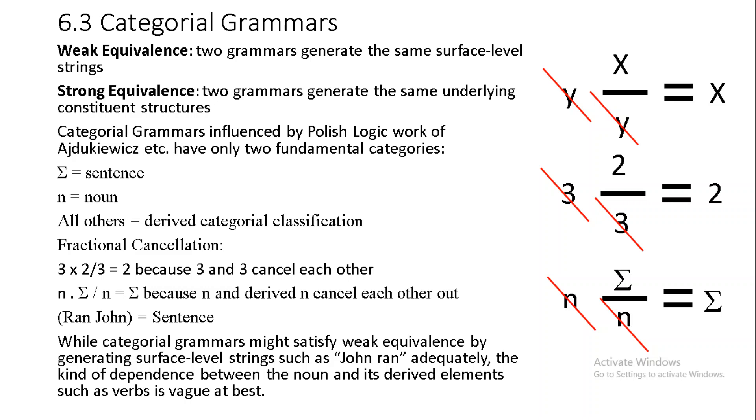What are we to make though of the fact that one could arrive at the same generated surface level sentences despite positing multiple underlying grammatical systems? Well let's just briefly examine categorical grammar to see the difference between strong and weak equivalents. In short two grammars have weak equivalents if they can generate the same surface level strings and have strong equivalents in contrast if they can generate the same underlying constituent structures. Once again we could put this to the test by comparing the kind of grammar we have been using thus far with the kind of categorical grammar influenced by the Polish logic work of Ajoukowicz and others.